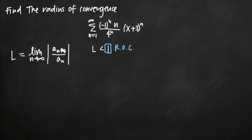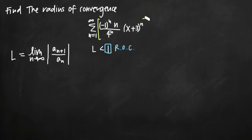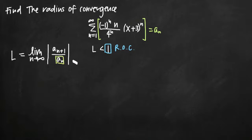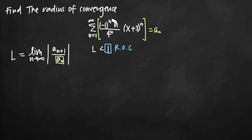We're going to deal with a sub n plus 1 and then with a sub n. Our series representation inside the infinite sum is equal to a sub n, so we already have the value for a sub n. We need the value for a sub n plus 1, and the way we get it is by switching out all of the n values in the series for n plus 1 — so everywhere we see n, we put in n plus 1 instead.